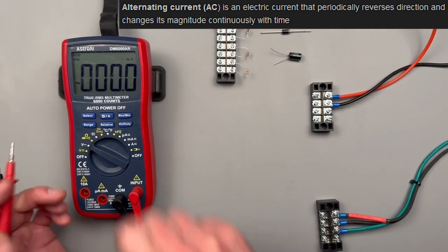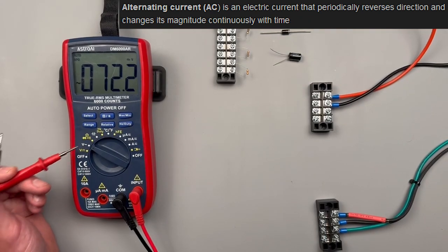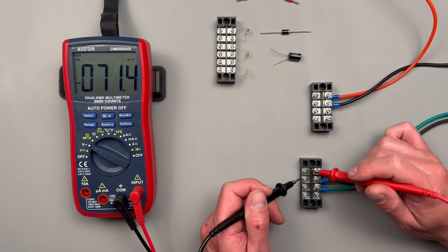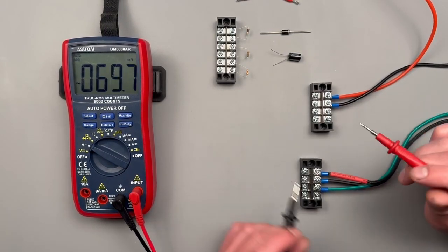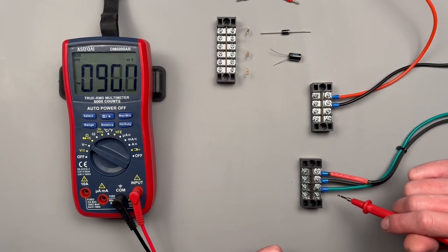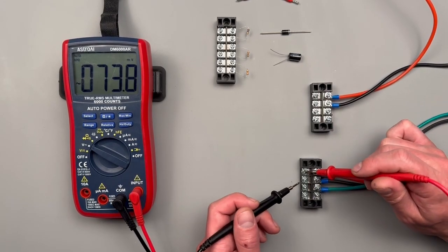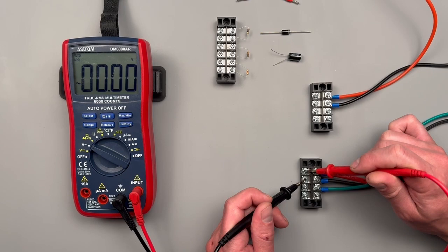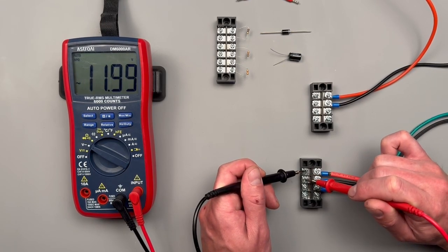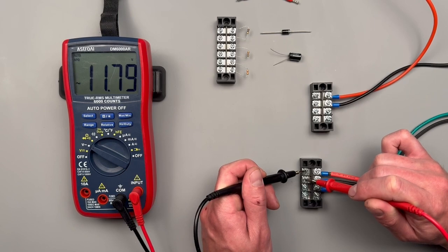Next up, volts AC. That's indicated by this little oscillating wave right here. Polarity does not matter for taking AC measurements, however it is still considered best practice. Down here on my AC terminal block I have a hot, this black here is a neutral, and green is earth. Red to hot, black to neutral, we'll see about 11.8 volts.